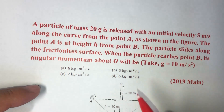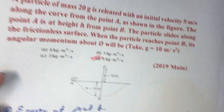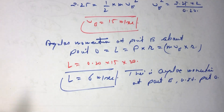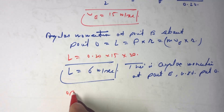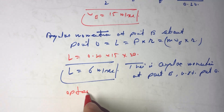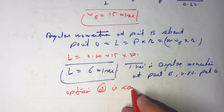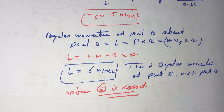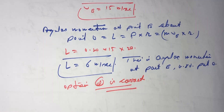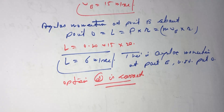So the angular momentum at point B with respect to point O is 6 kg·m²/s. For the options, option number D is the correct answer. This completes the question, thank you.